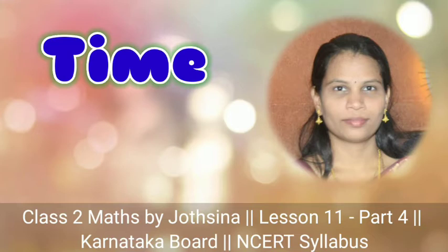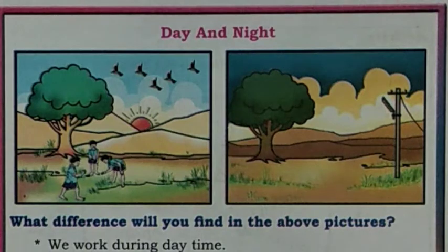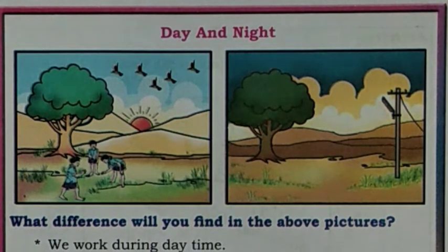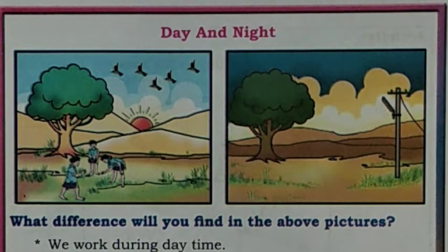Children, let us learn about day and night. In one full day, half of the time is day and half of the time is night. Children, what difference will you find in the above pictures? We work during day time. We sleep during night time. Birds are flying during day time and rest in nests during night. During day time, we get sunlight. During night, we use different artificial sources of light.